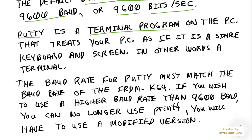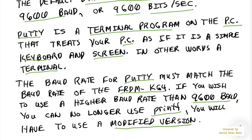PuTTY is a terminal program on the PC and it treats your PC as if it was just a simple keyboard and screen — in other words, a terminal. The Baud rate for PuTTY must match the one for the Freedom K64. If you wish to use a higher Baud rate than 9600 Baud, you can no longer use printf; you will have to use a modified version of printf. There is documentation showing you how to do that. You must ensure that the PuTTY Baud rate and the Freedom K64 Baud rate are set the same so that the two systems can communicate properly.